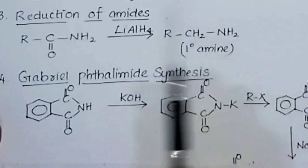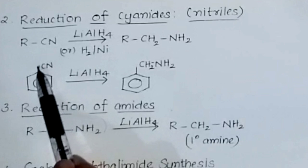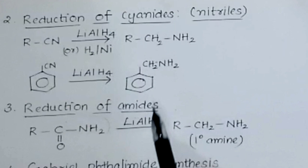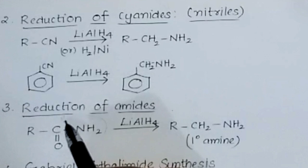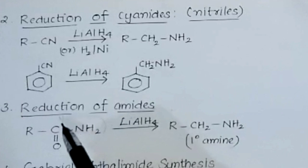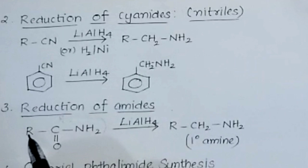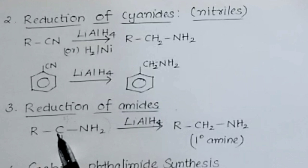The third method is reduction of amides. Amides contain the CONH2 group. On reduction using lithium aluminium hydride, the CO group loses oxygen and gains hydrogen — the CO group changes to CH2 group. We get RCH2NH2, the corresponding amine.